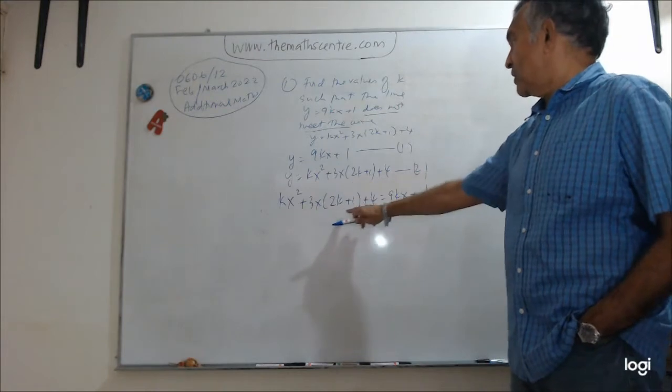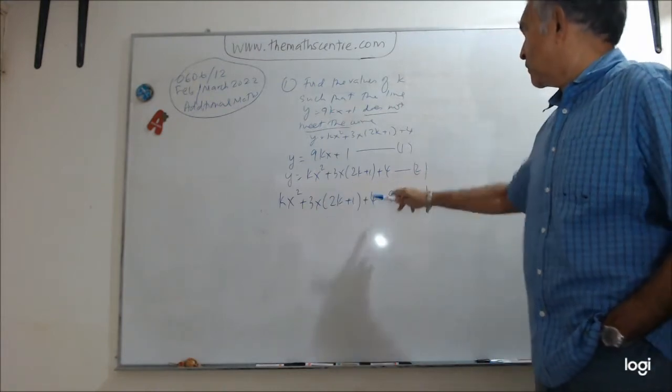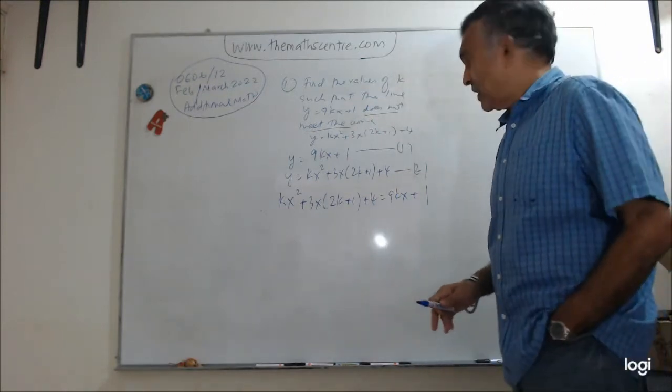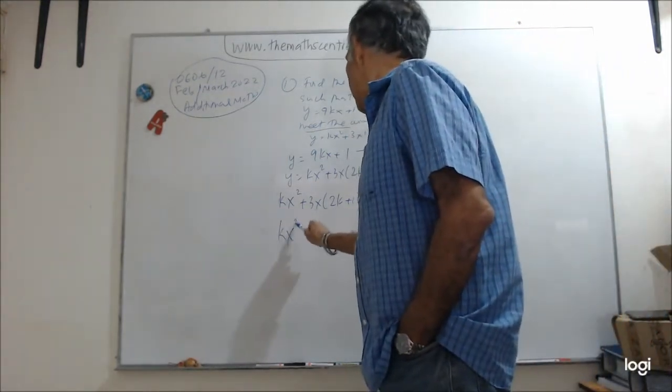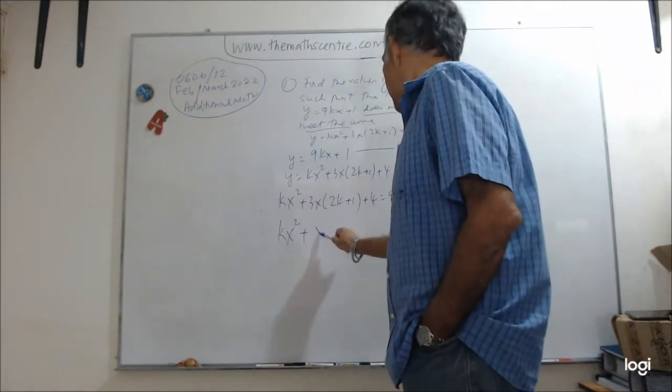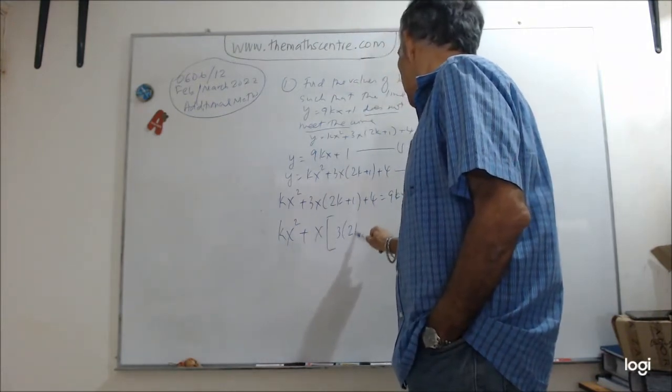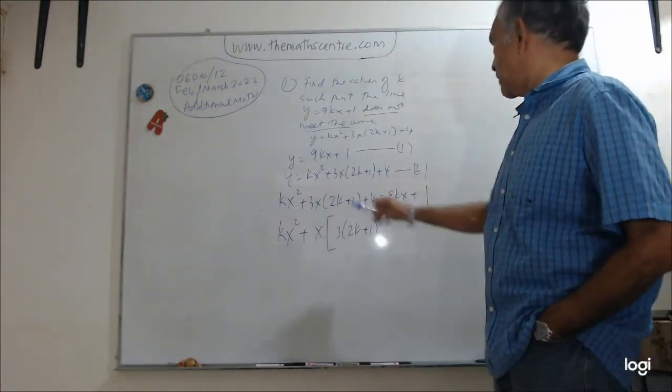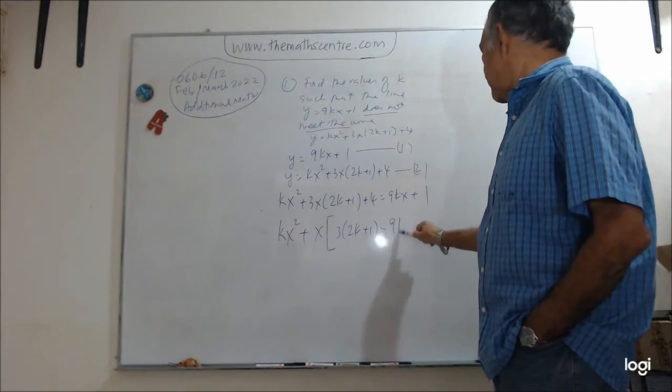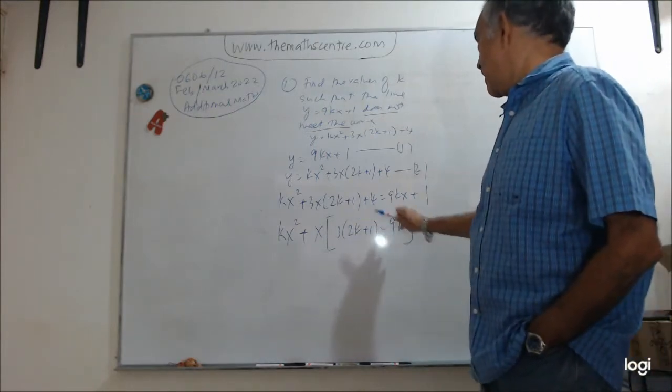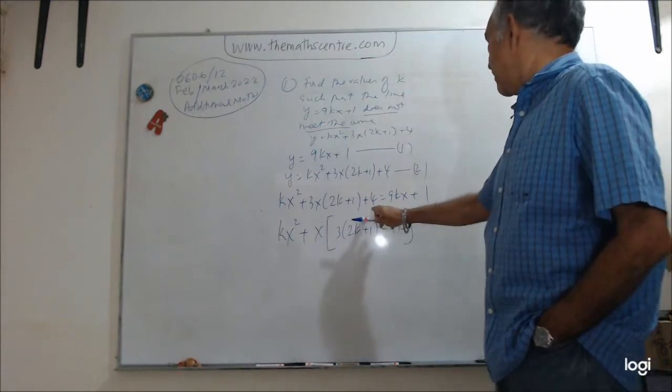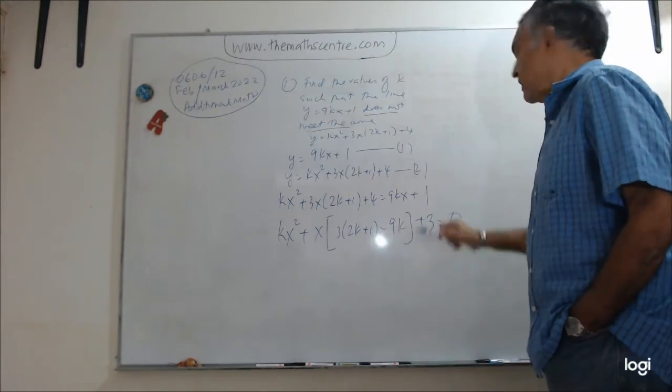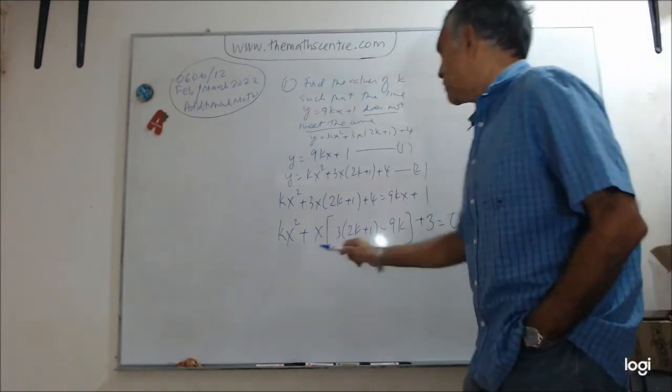So now, what we can do is we can write this as kx squared plus 3x, 2k plus 1 plus 4 equals 9kx plus 1. All good. Now we need to set up a quadratic equation in x. So we have kx squared plus 3, 2k plus 1 and then I have a 9kx here. Let me bring it to the left hand side. I'll have minus 9k and then I have a 4 here. I have a 4 here and I have a 1 here. So I'll have a 3 and I'm done.